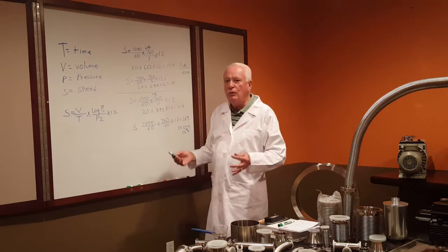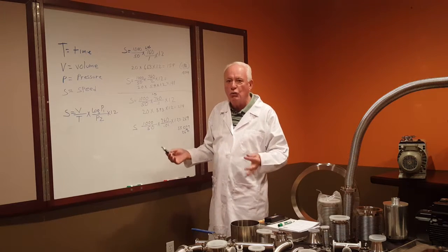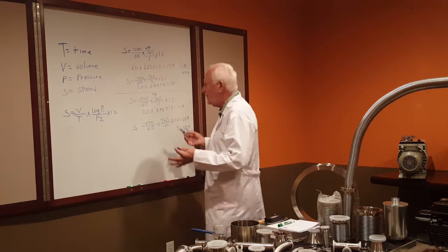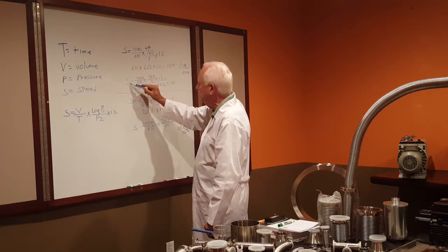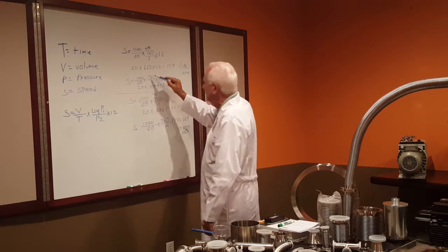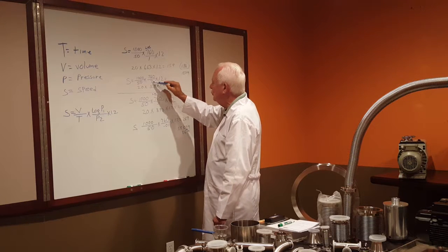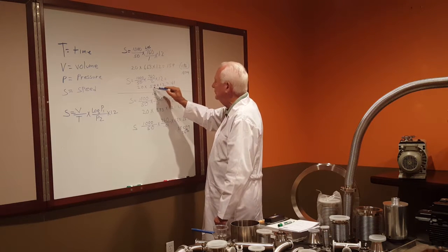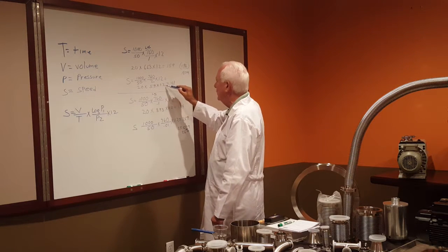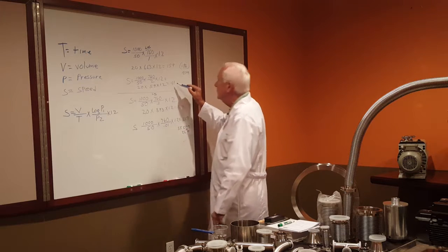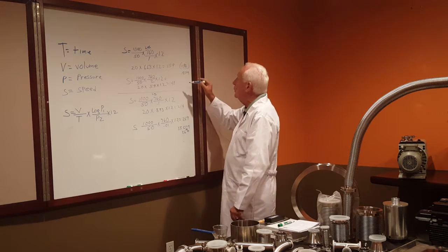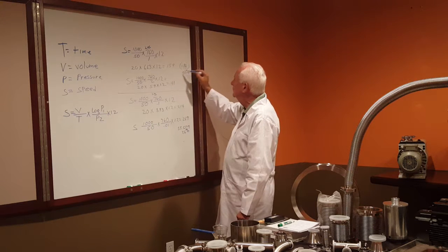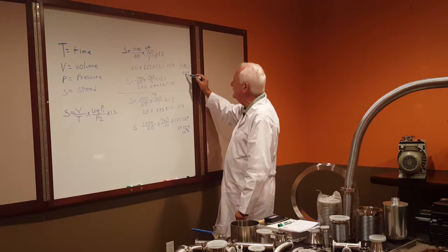Now, if you tell me you only need 2 torr — which doesn't seem like much — I'll determine the pumping speed for the same volume, but it's the log of 760 over 2, which is 5.9, times 1.2. So I only need a 141 CFM pump. By going to 1 torr instead, you're increasing the speed by 18 CFM, or 13%.